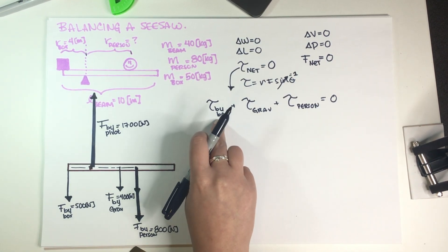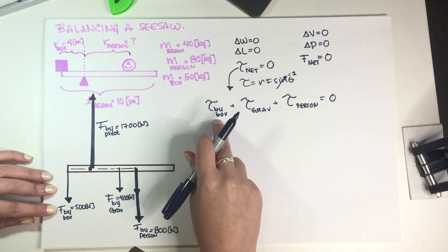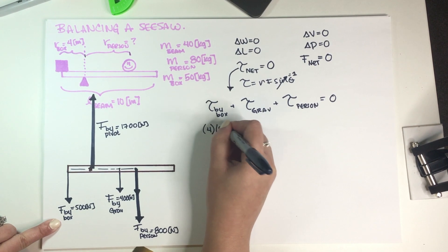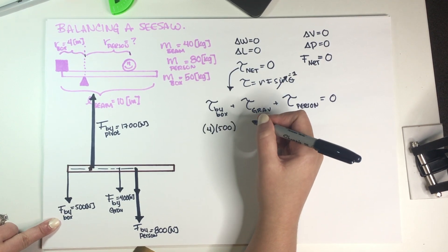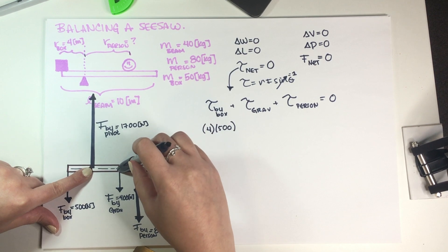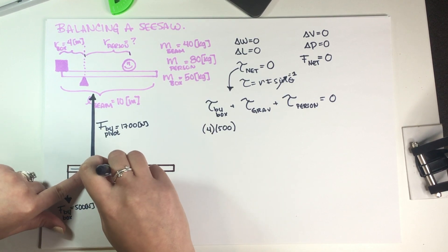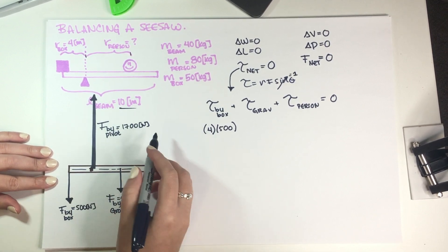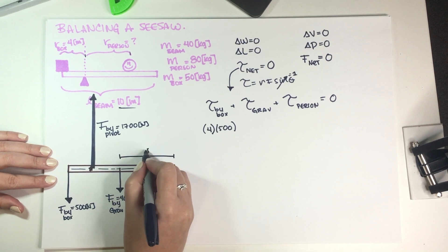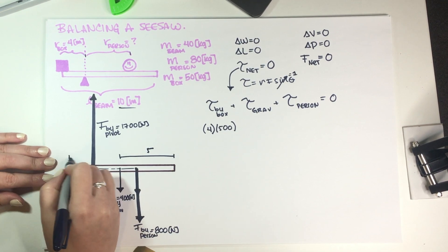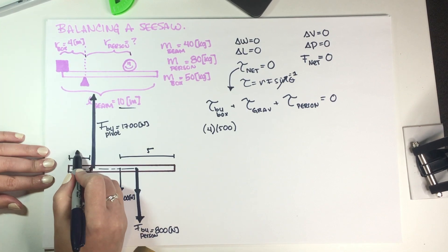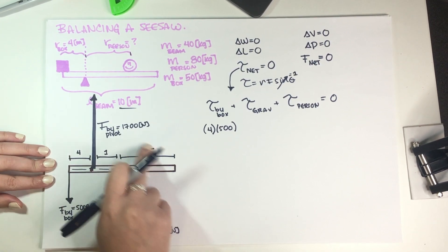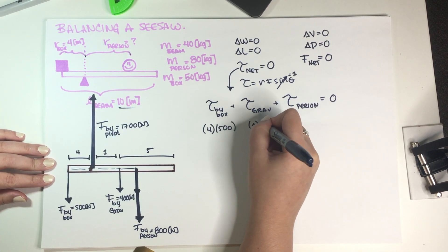Substituting values: torque due to box is r-box times force = 4 meters × 500 N. Torque due to gravity is the distance from the pivot to the beam's center of mass. The total beam length is 10 meters; the box side is 4 meters, so the center is 5 meters from the end, giving 1 meter from the pivot. That's 1 m × 400 N. Torque due to person is r-person × 800 N — we don't know r-person yet.